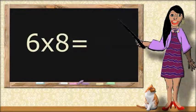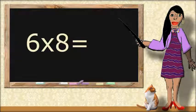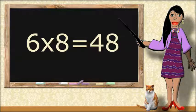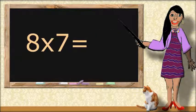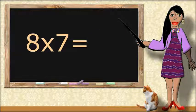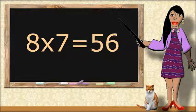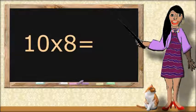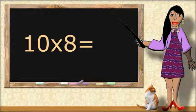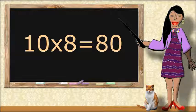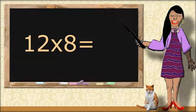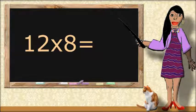6 times 8 equals 48. 8 times 7 equals 56. 10 times 8 equals 80. 12 times 8 equals 96.